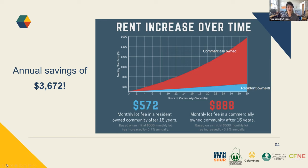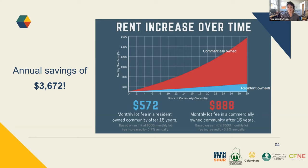Every couple of years, ROC USA looks at all the resident-owned communities in their network and tracks what rents look like after five years and ten years. After five years, site fees are about 11% below market rate. After ten years, they're 21% below market rate. While communities around resident-owned communities are changing hands and costs are going up — and a community owner understandably is going to profit — in a resident-owned community, you have the stabilization effect: you vote on your budget and where you want your money to go.